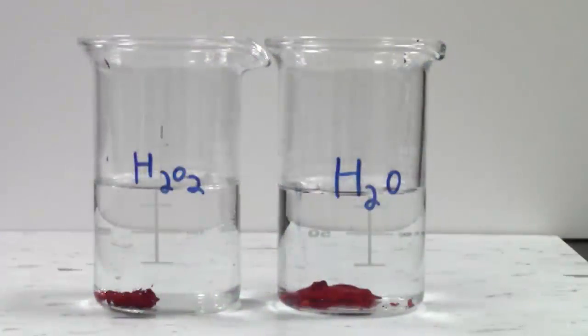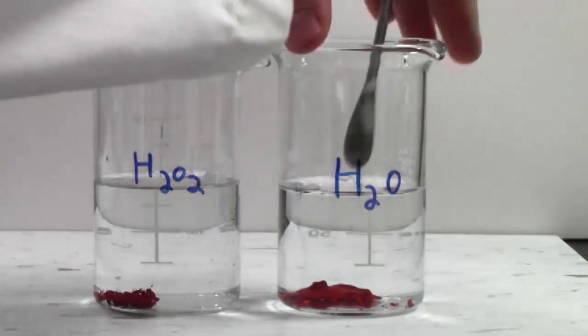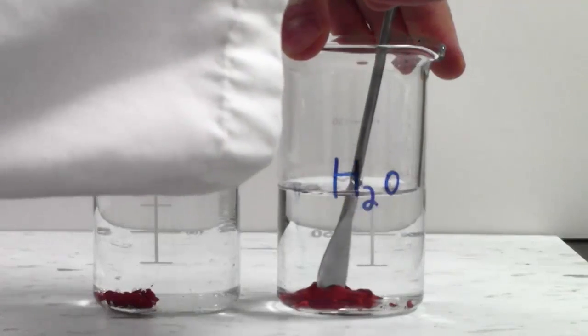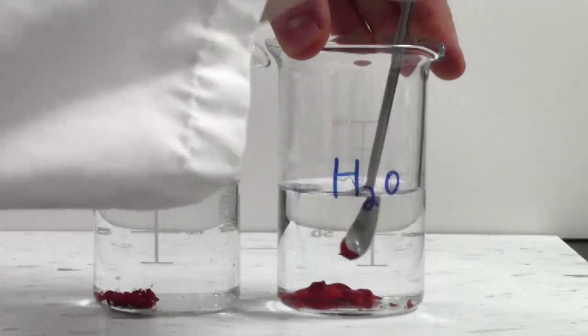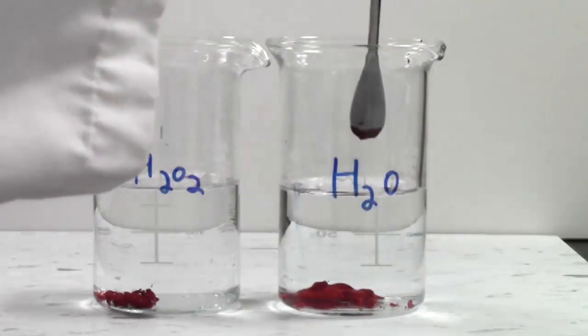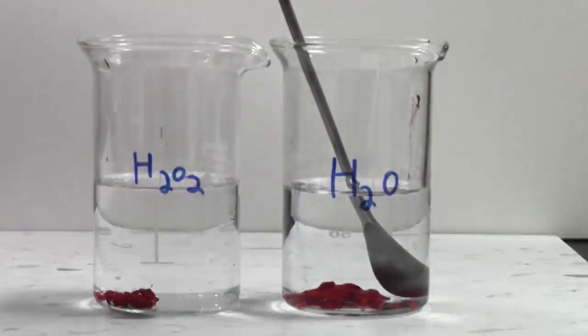In this demonstration, we have water added to the beaker on the right and we have a solution of hydrogen peroxide in the beaker to the left. We then added a mixture of various soils in each beaker. Being naturally hydrophobic, the soil in the beaker to the right globs up into one big mass. And as you'll notice, even cutting through, the mass globs up together into one big piece.